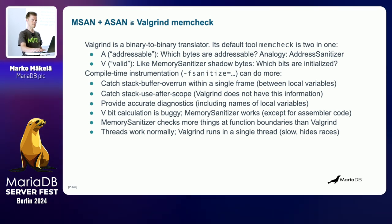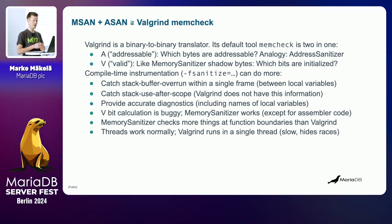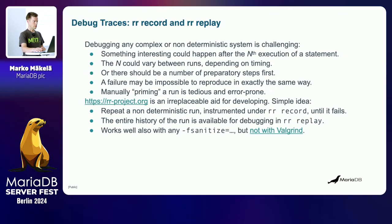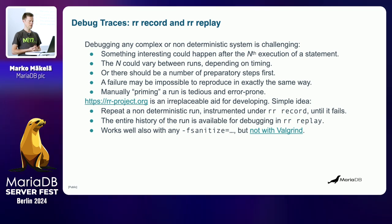It does happen quite often that Valgrind also catches things that memory sanitizer or address sanitizer doesn't — but I haven't actually seen an example where they miss something that Valgrind catches. I'd very much like to see such an example if it happens. The other part of my talk is about the debugging tool RR — recording and replaying traces.